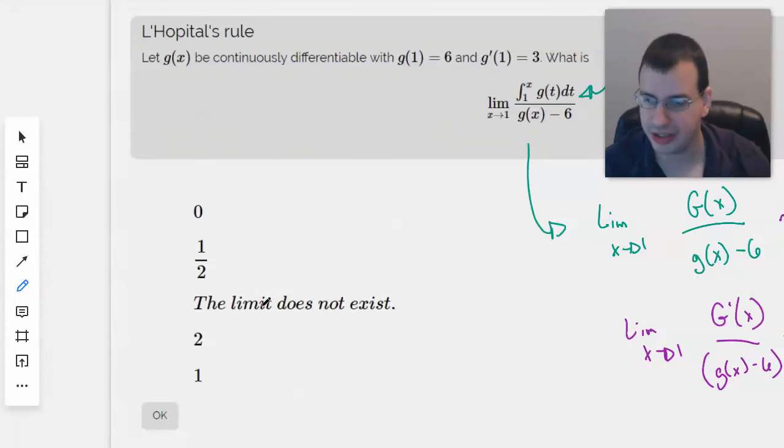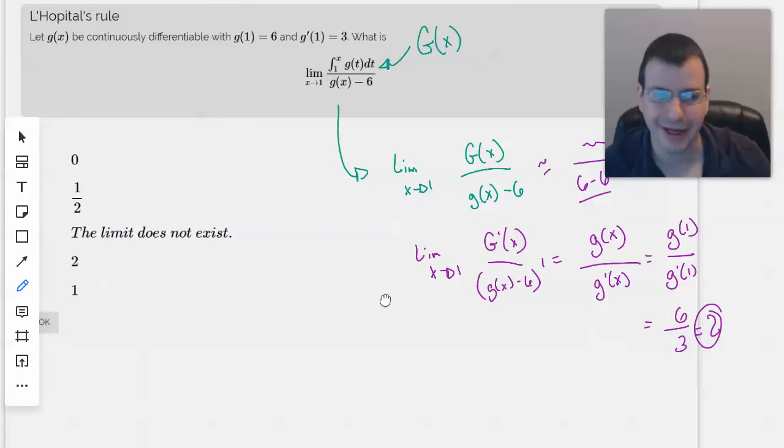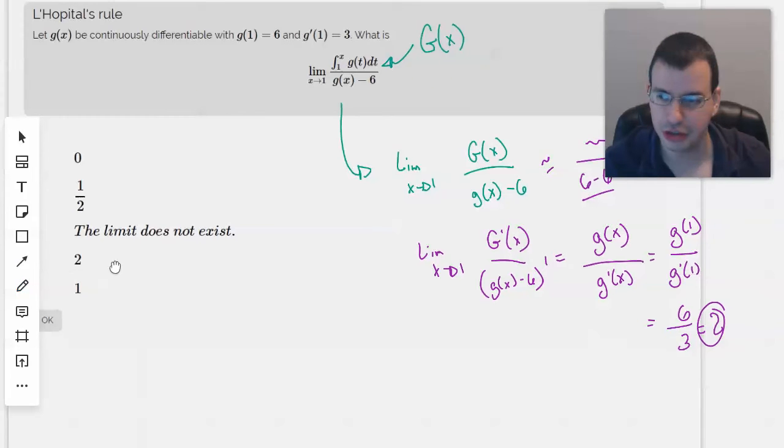Oh, ha ha, 6, oh, did I do that upside down? Ah, human performance trap. Maybe, no, it's correct, I'm correct, yes. Yep, 6 over 3, 2.